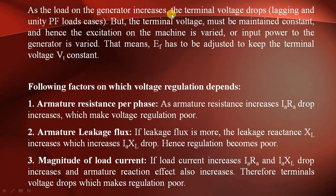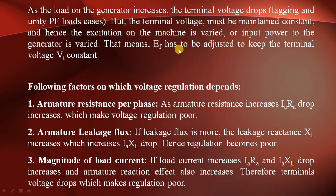As the load on the generator increases, the terminal voltage drops for lagging and unity power factor loads. Since the terminal voltage must be maintained constant, the excitation of the machine is varied — that is, EF is adjusted to keep the terminal voltage VT constant. This is the voltage regulation of the alternator.